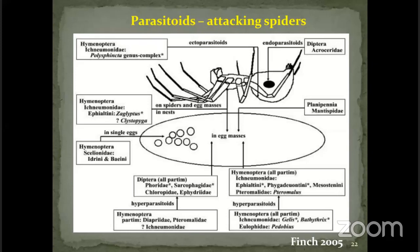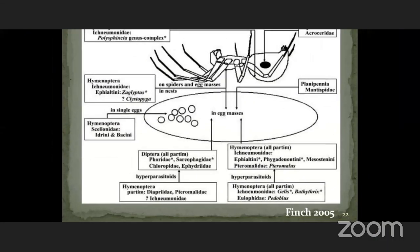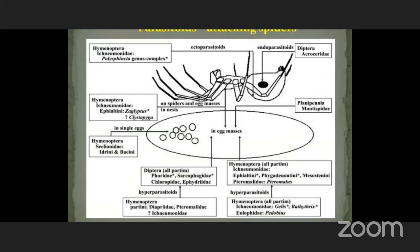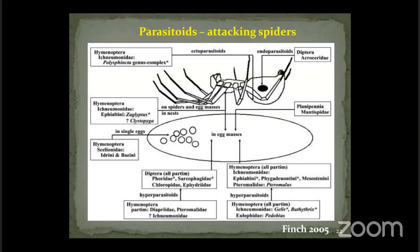This slide shows the parasitic complex — which stages are attacked by which groups of natural enemies. Eggs are attacked by ichneumonids, while adult spiders are internally attacked by Acroceridae. Single eggs are attacked by Scelionidae — that is, solitary in nature. Eggs are also attacked by Pteromalidae and other groups of dipteran parasitoids like Phoridae and Chloropidae.